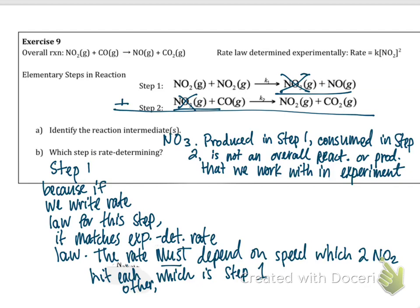NO3 is not something we'd add to the beaker doing the overall reaction, nor is it a final product — it's formed along the way. The rate-determining step is step one: if we write the rate law for step one it would be k times [NO2] to the second order, which matches the experimentally determined rate law. That means the rate depends on the speed at which two NO2 molecules hit each other, which is exactly what's happening in step one. And that's where we'll end for this video.